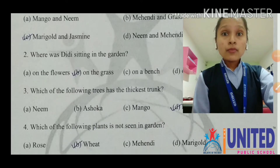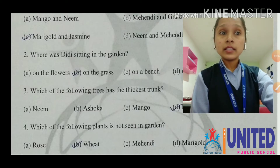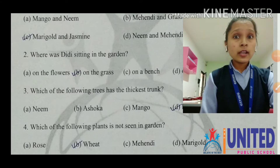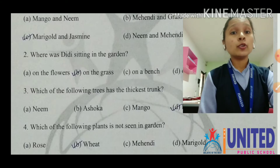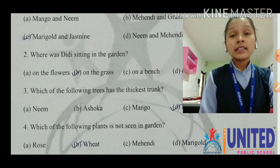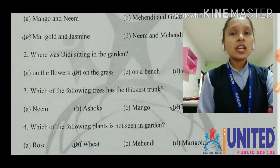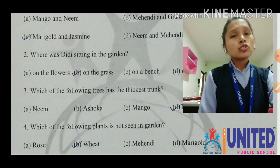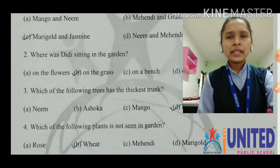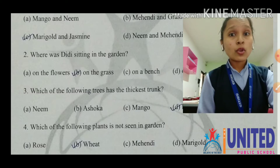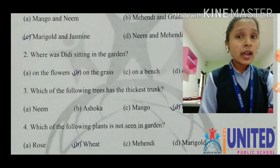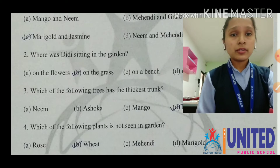Number four: which of the following plants is not seen in a garden? Option A is rose — rose is always there in the garden. Option B is wheat — wheat means the grain used to make chapati. Option C is mehendi and option D is marigold. Wheat is not seen in the garden because wheat grows in the farm, not in the garden. So option B, wheat is the answer.